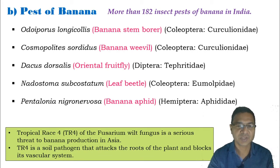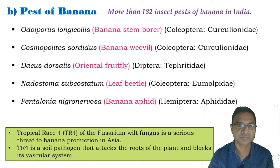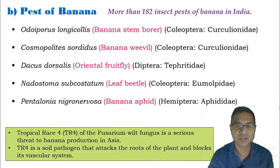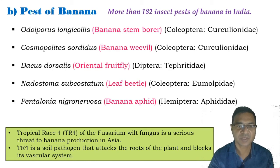Among these, some of the major pests causing severe damage to banana plants are Odoiporus longicollis, commonly known as the banana stem borer or pseudo-stem borer; Cosmopolites sordidus, the banana weevil; Dacus dorsalis, the oriental fruit fly, which sucks the sap; Nedostoma subcostatum, commonly known as the leaf beetle; and Pentalonia nigronervosa, the banana aphid.